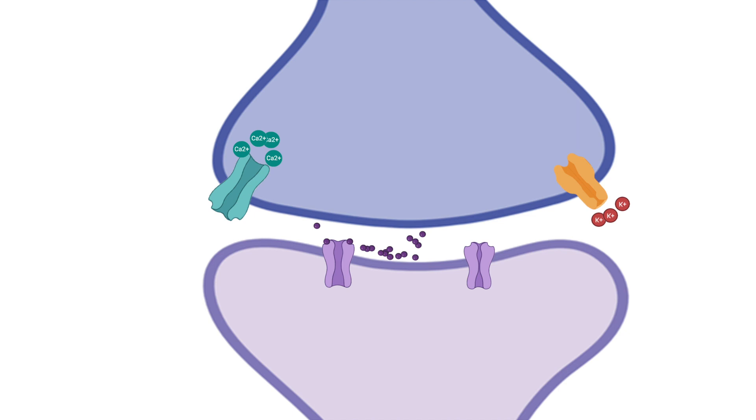When potassium flows out of the cell, it changes the membrane potential, repolarizing the cell. The threshold needed for the calcium channels to open is no longer met and calcium channels close. No more calcium can flow in, which will in turn no longer trigger the release of vesicles. The new membrane potential will also trigger the potassium channels to close and the neuron is brought back to its resting state.